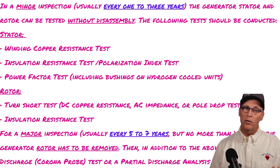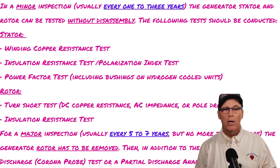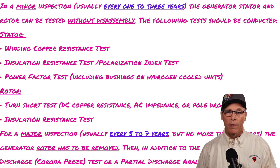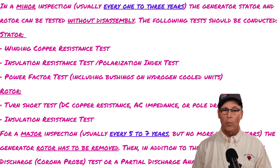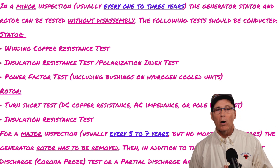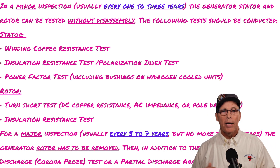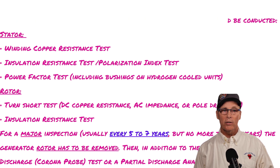Every five to seven years — no more than ten years — you're looking at a major inspection. You have to pull the rotor, or field, out of the stator. In addition to all the minor inspection tests, you perform a slot discharge corona probe test or partial discharge analysis. This framework came from one of the largest insurance company engineering groups, which has a workbook for power generation recommending these steps for keeping generators clean and healthy.